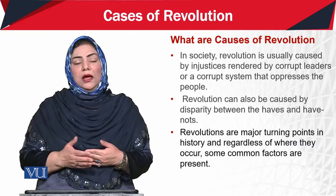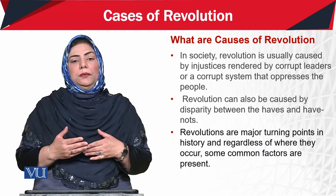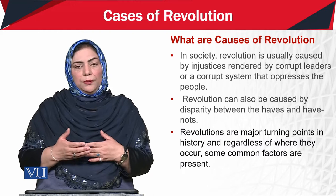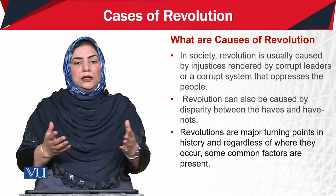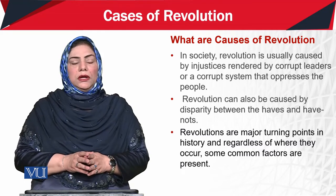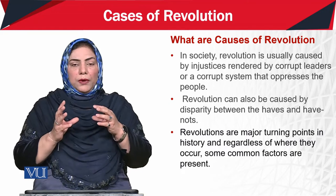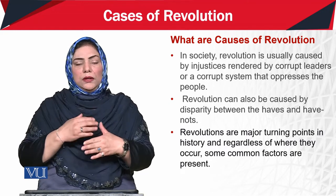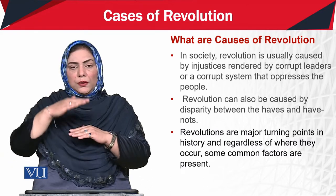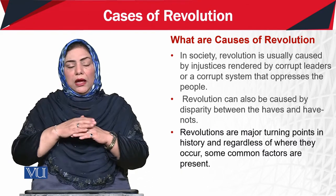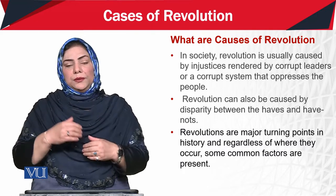Revolutions ki causes عام طور پر کیا ہوتی ہیں — جو common ہیں وہ یہ ہیں کہ جب لوگ اپنے system سے تانگ ہو جائیں، اپنی corrupt leadership سے تانگ ہو جائیں جو ان کو satisfy نہیں کر پاتی۔ اور پھر اس کے ساتھ ساتھ یہ بھی ہو سکتا ہے کہ society کے اندر جن کے پاس resources ہیں اور جن کے پاس resources نہیں ہیں — ان کے درمیان gap اتنا زیادہ بڑھ جائے کہ اس widened gap کی وجہ سے لوگوں کے اندر unrest create ہو جائے۔